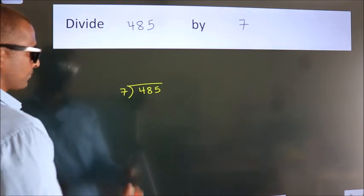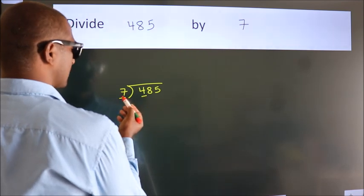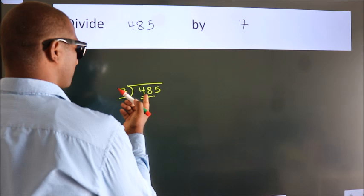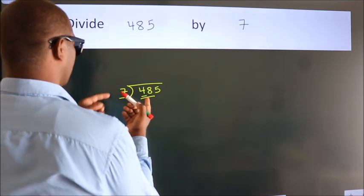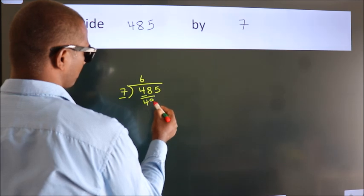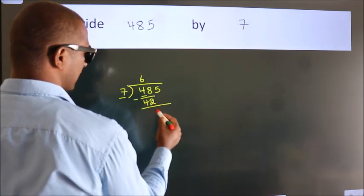Next, here we have 4, here 7. 4 is smaller than 7, so we should take 2 numbers: 48. A number close to 48 in the 7 table is 7 times 6, which is 42. Now we should subtract. We get 6.